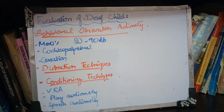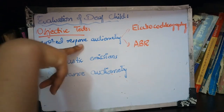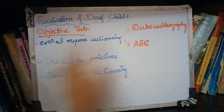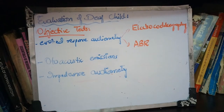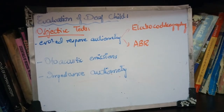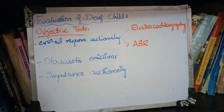What are objective tests? Objective tests are three types. The first is evoked response audiometry. In evoked response audiometry, we see the electrical impulses generated as a result of the transmission of nerve impulses in the brain. We detect these. The first type is electrocochleography.